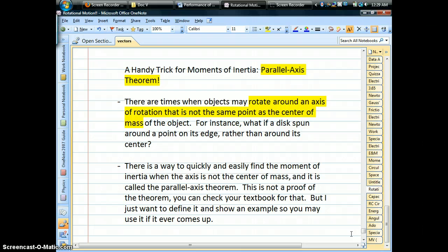This is a neat little trick. It's a theorem that allows you to very quickly and easily find moments of inertia when your axis of rotation is in weird places for an object. By that I mean we're really using this when your axis of rotation is not at the center of mass of the object.